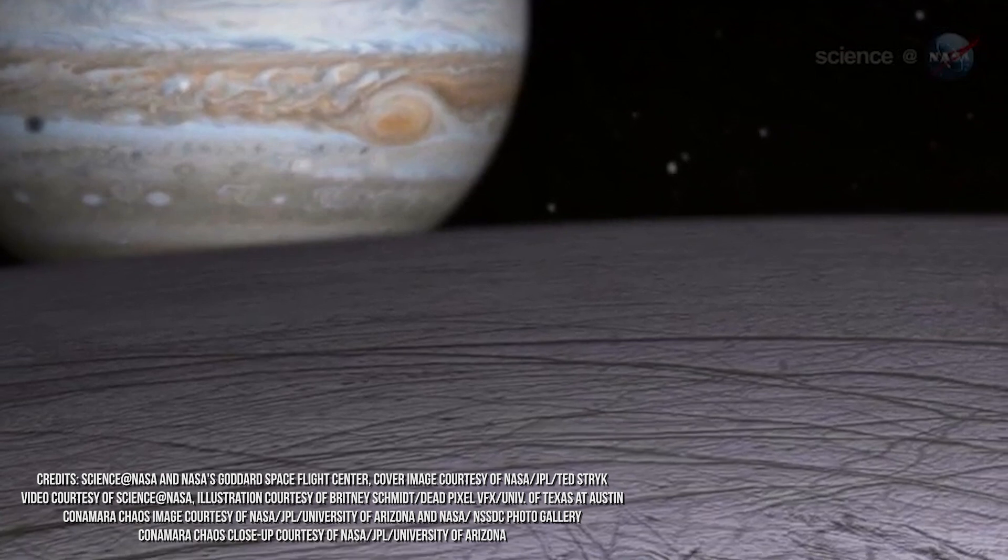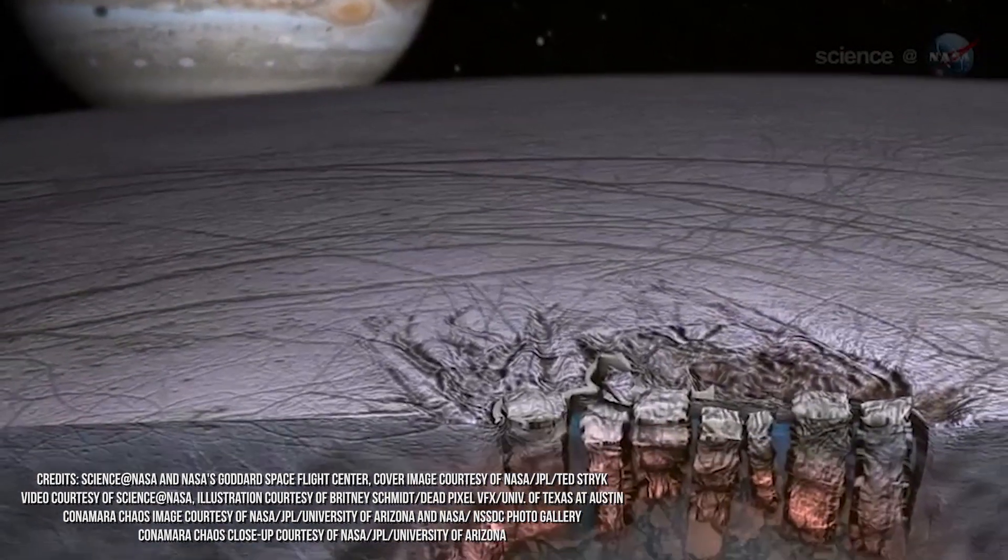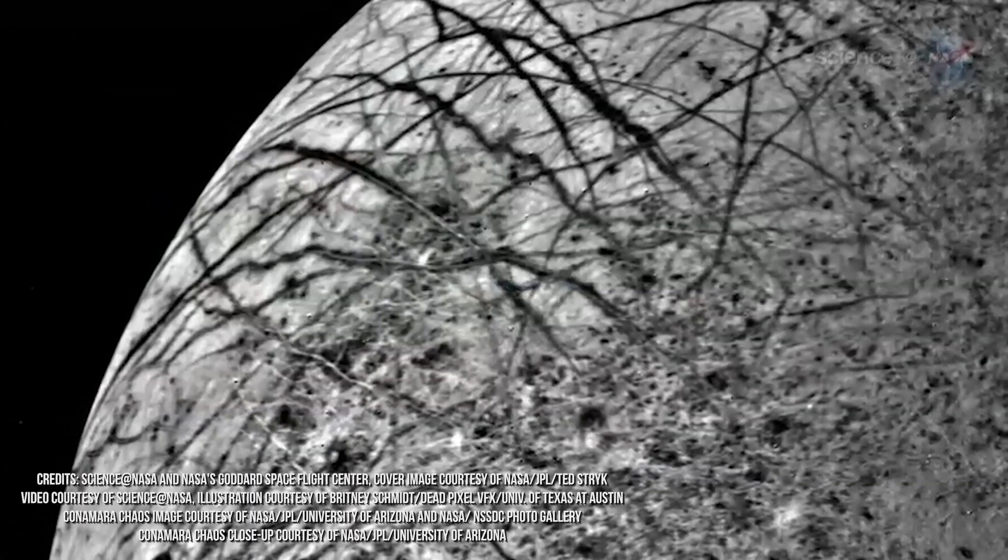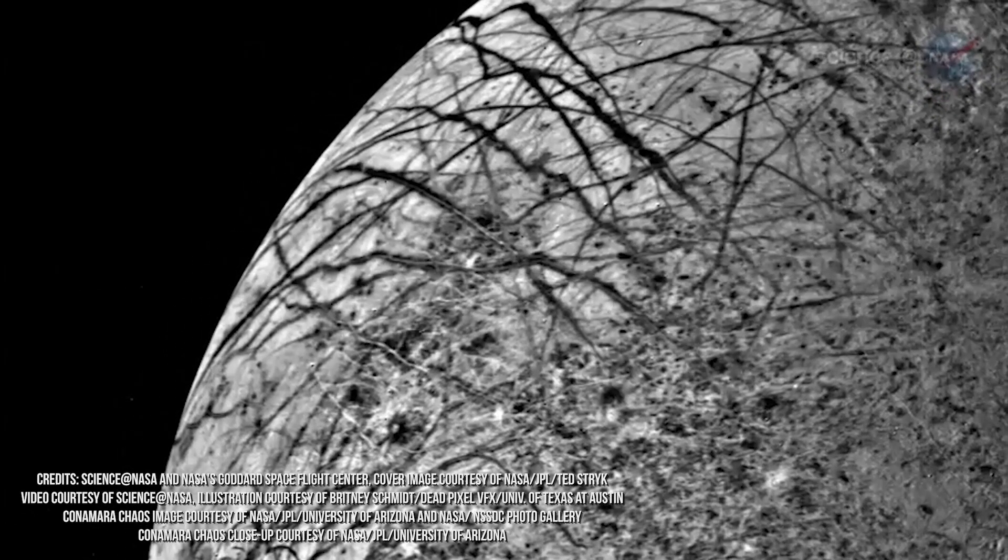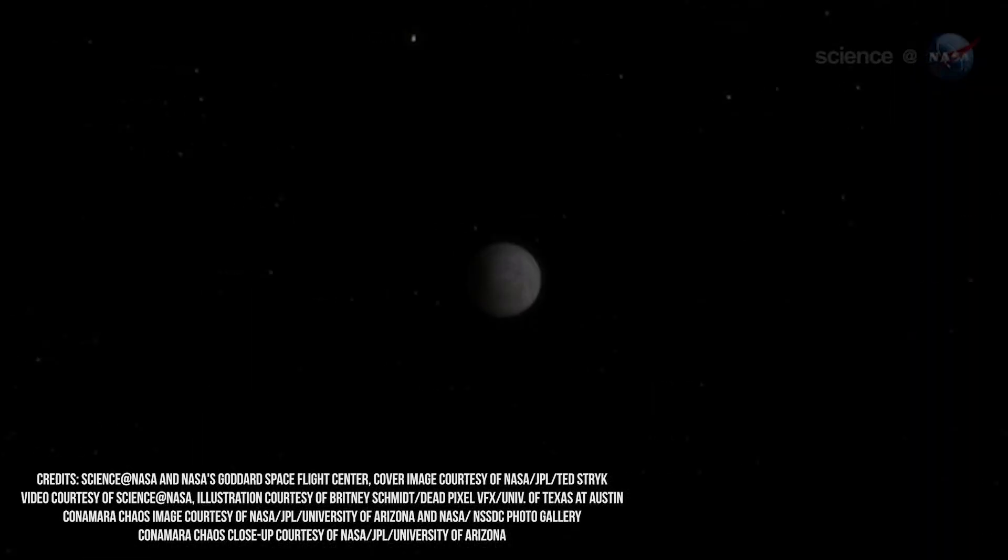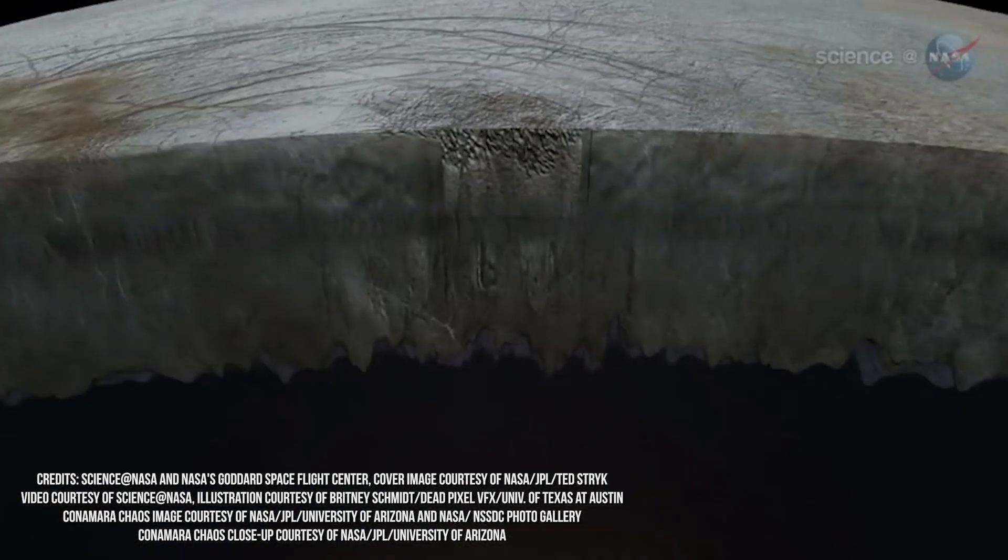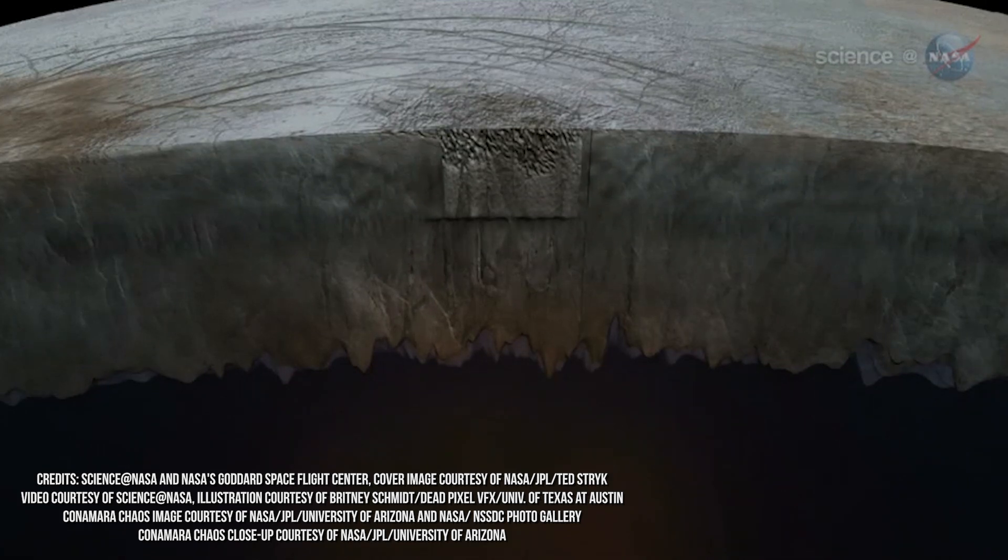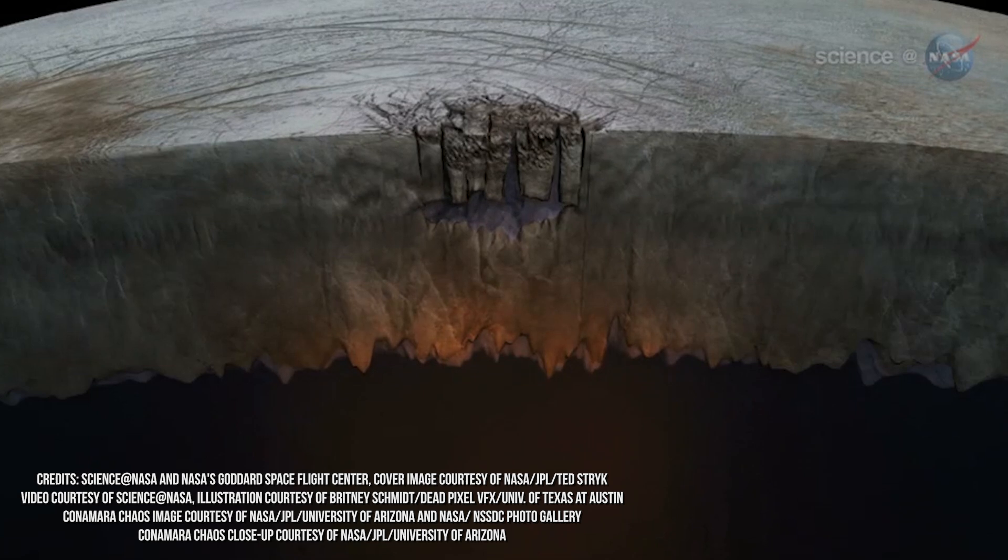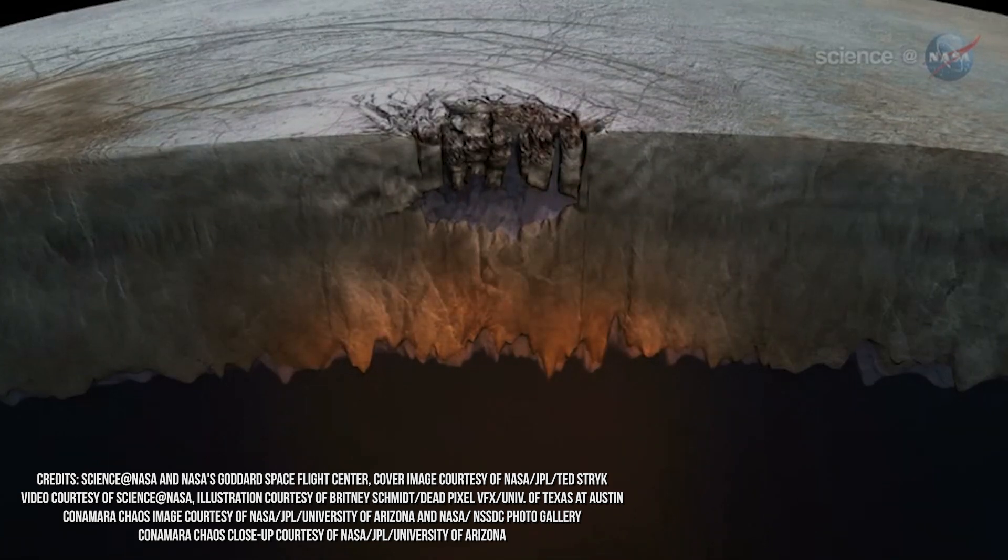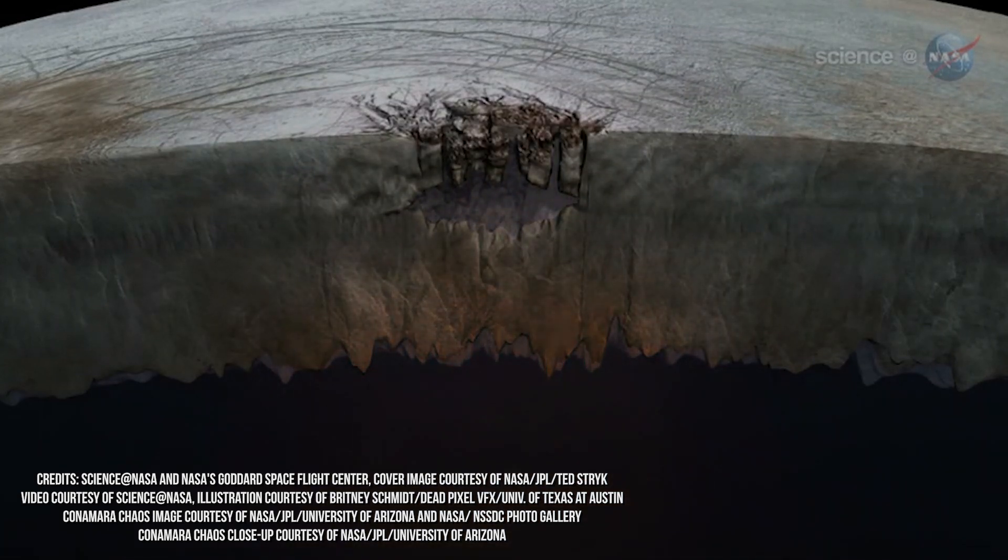This process can take thousands of years, but once it started, it would provide a constant stream of oxygen from the surface to the ocean in substantial amounts, enough to maintain a life-supporting environment. The connection between chaotic terrain and oxygen transport is not entirely established. However, scientists believe that convective upwellings induced by tidal warmth to the surface partially melt the ice, resulting in the surface's tangled chaotic topography.